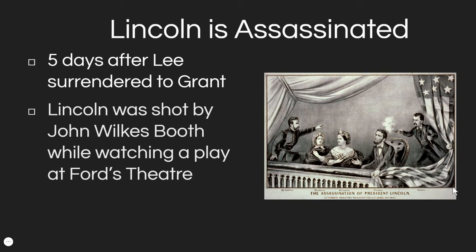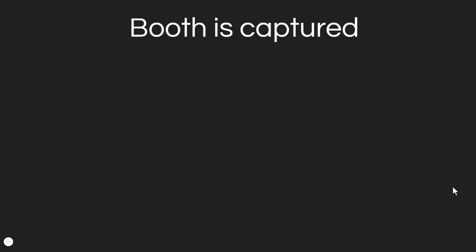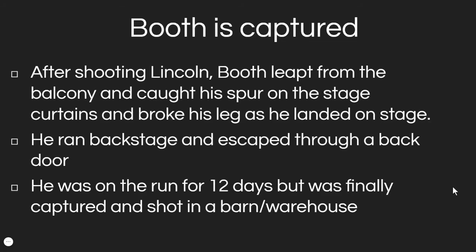Before we can even address that, Lincoln is killed — five days after Lee surrenders to Grant, Lincoln is shot at the theater by a vehemently pro-slavery actor named John Wilkes Booth. Booth was a very well-known actor and pro-slavery activist. He kills Lincoln, jumps from the presidential viewing box onto the stage and runs. He's eventually captured, but for Lincoln it's too late — Lincoln dies. Booth is captured and eventually killed, along with the doctor who fixed his broken leg, who is tried and put to death for treason.